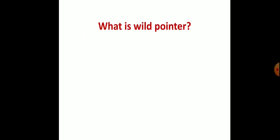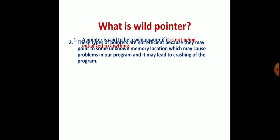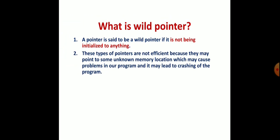What is a wild pointer? A pointer is said to be a wild pointer if it is not being initialized by anything. There is nothing initialized - just a pointer has been declared but there is no initialization done. These types of pointers are not efficient because they may point to some unknown memory or garbage memory location, which may cause problems in our program and may lead to crashing the program.